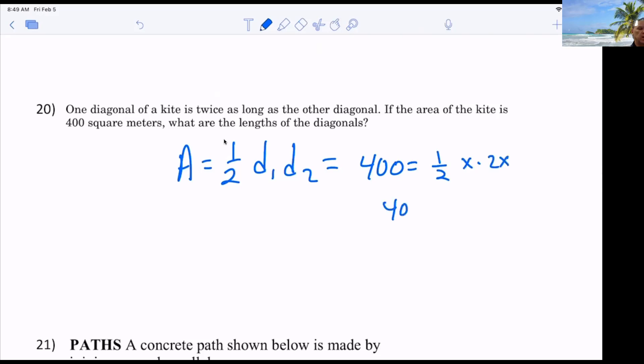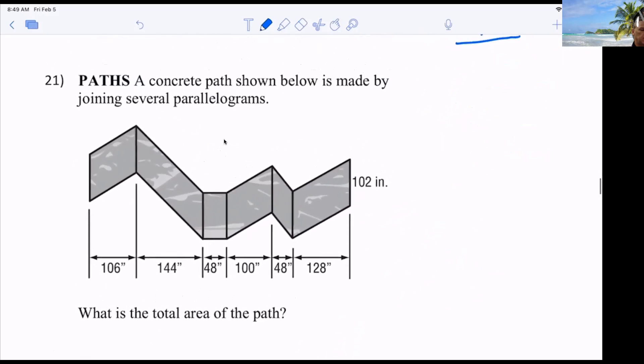So wow. 400 equals x squared. X equals 20. So one diagonal is what? And the other diagonal is? And then we would say that they were meters. That was kind of easy. We're relating one to the other. One is twice as much as the other, Sam. 20 times 40 times 1⁄2 is 400. 400. Thank you. Okay.